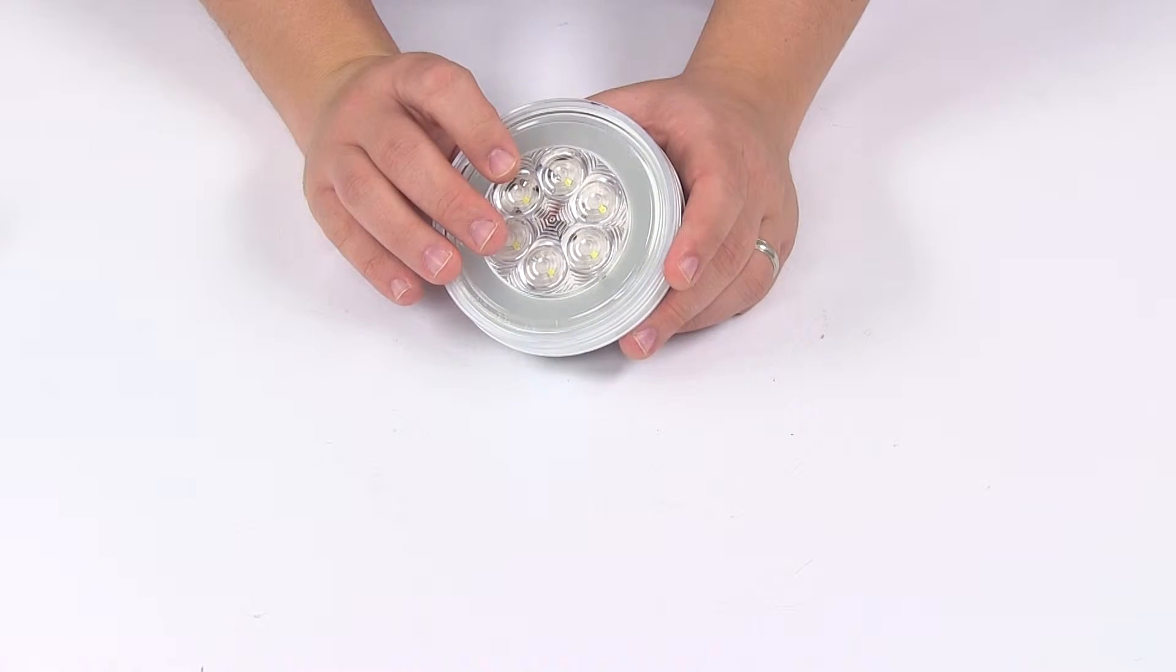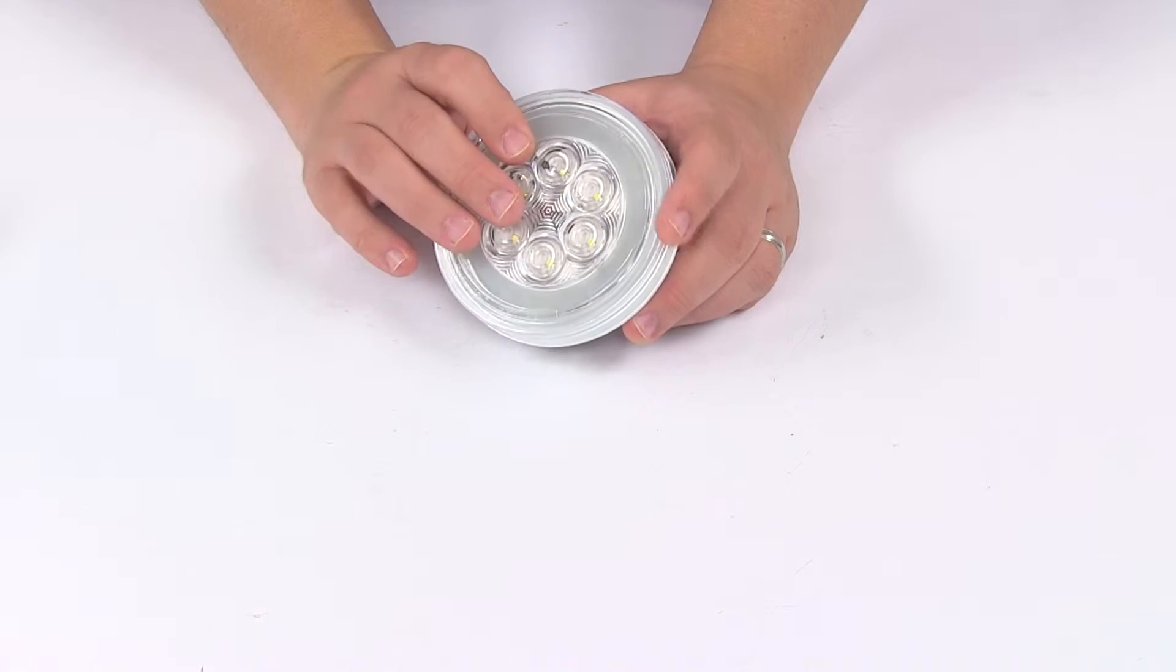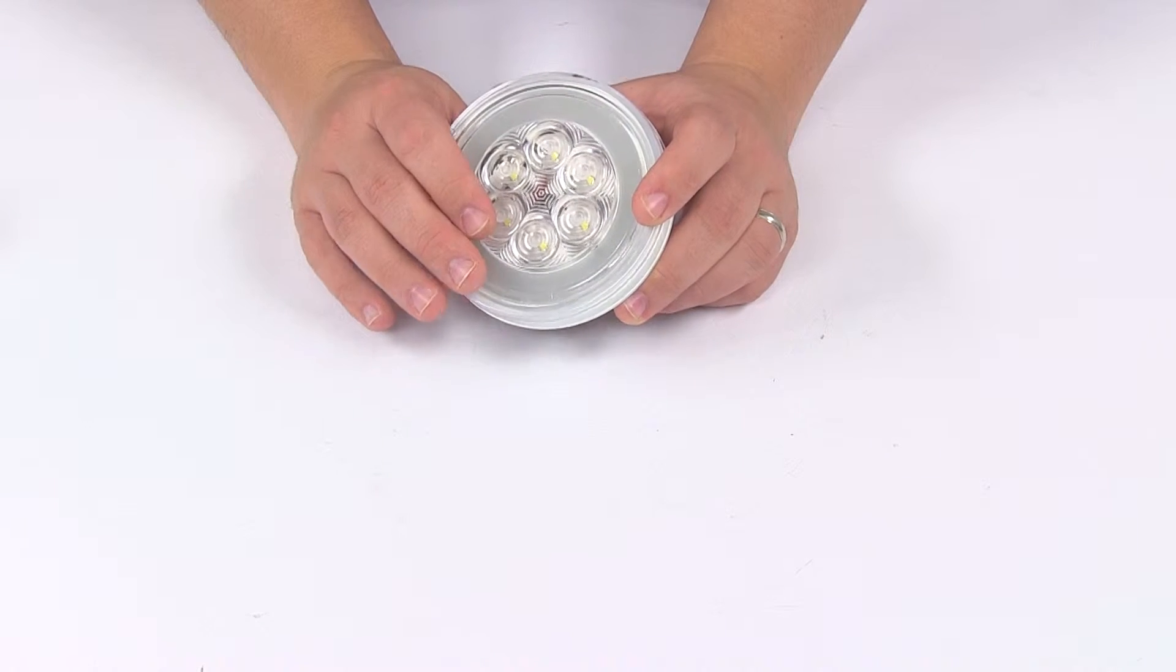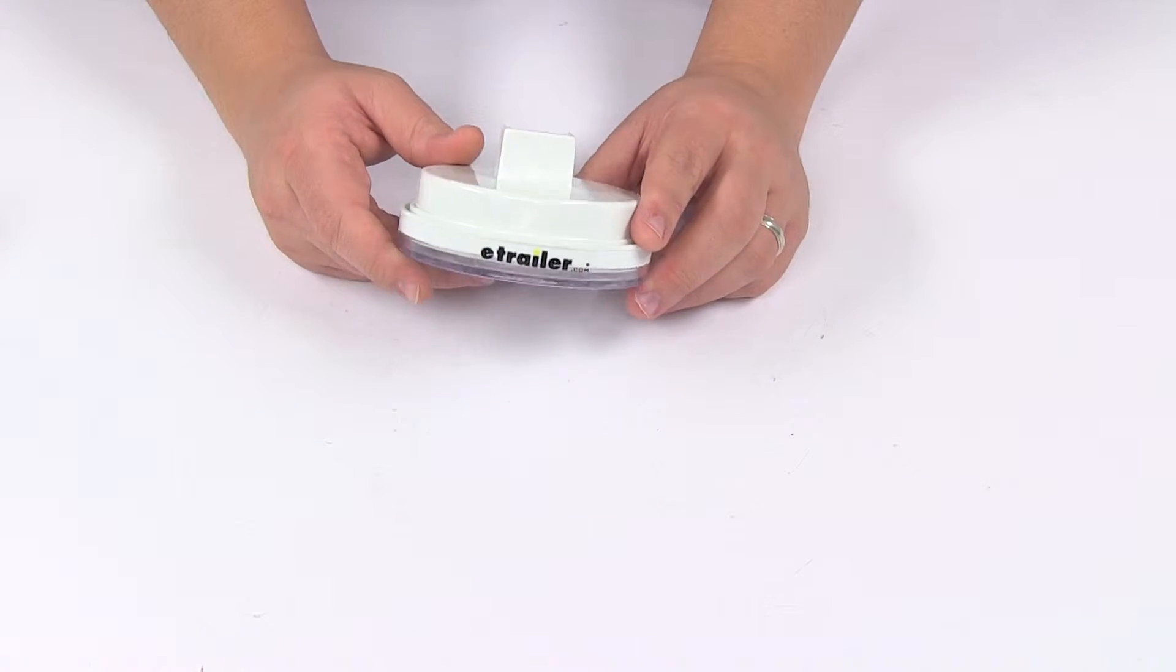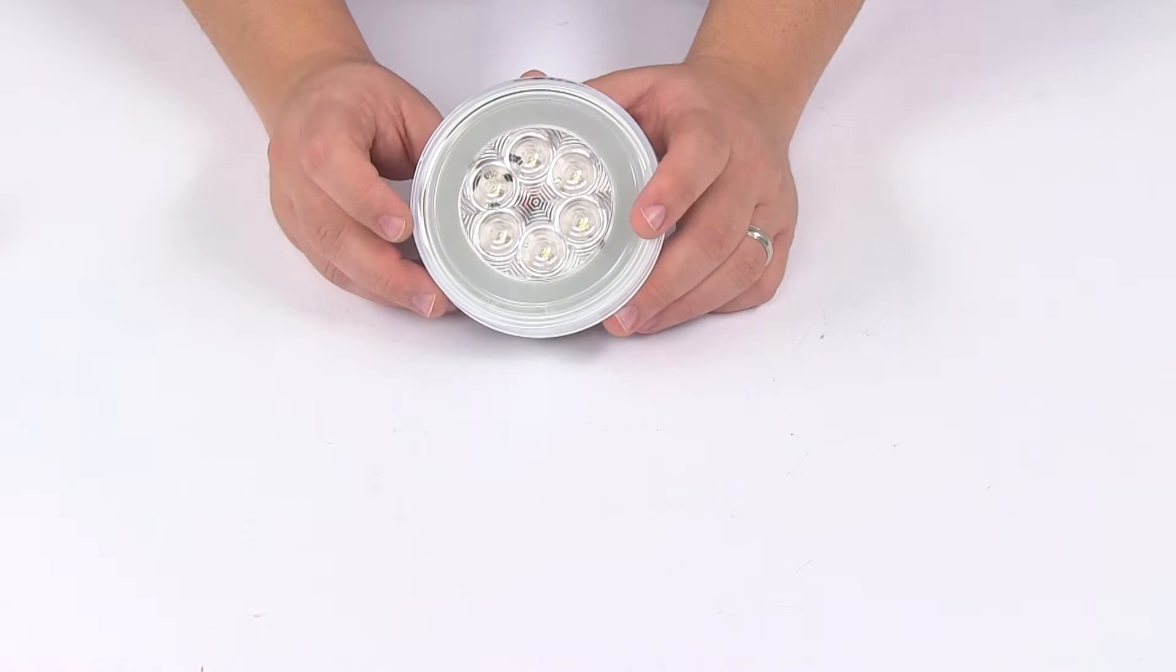The unit features a polycarbonate lens and housing with white LEDs and a clear lens. This is designed to be a recessed mount with a mounting grommet. Your grommet is sold separately if you're in need of one.